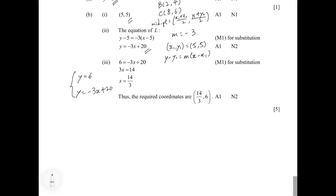To solve the system of equations, we consider y = 6 and y = -3x + 20. Since the left-hand sides are both equal to y, we equate the right-hand sides: 6 equals negative 3x plus 20. Making x the subject, we move negative 3x to the left to get 3x, and move 6 to the right so the right-hand side becomes 20 minus 6, which equals 14. So 3x = 14, meaning x = 14/3. Since the y-coordinate is 6, the coordinates of the point of intersection are (14/3, 6).